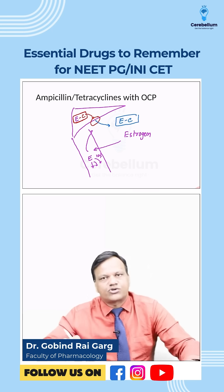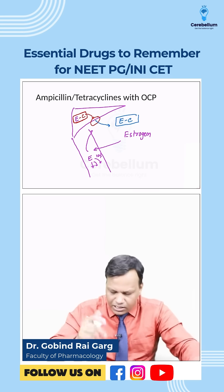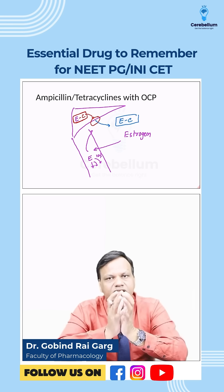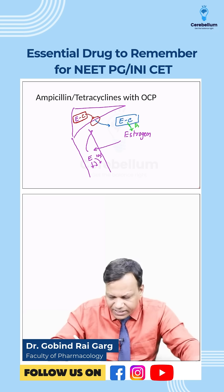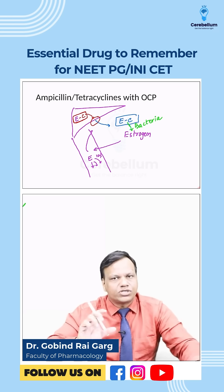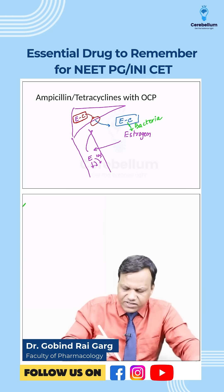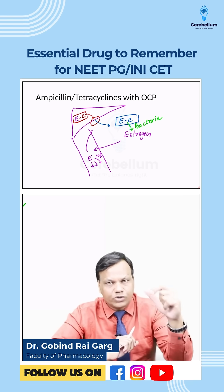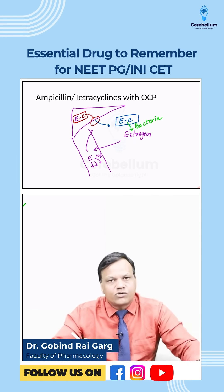Once conjugated estrogen enters the GIT, the bacteria present in the colon break it down back into free estrogen. This free estrogen is then reabsorbed. Some is utilized systemically, and some goes back to the liver where it is conjugated again, secreted into the GIT, and once again converted back to estrogen for reabsorption.